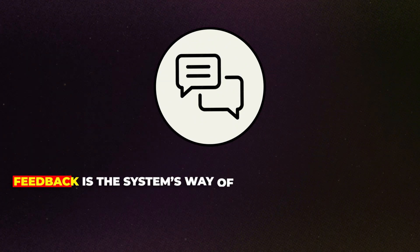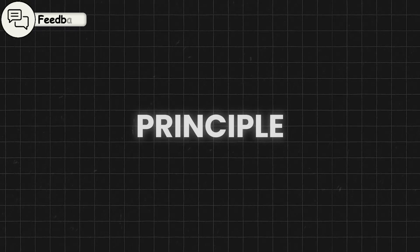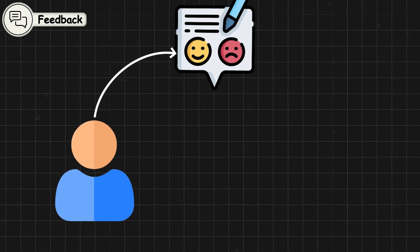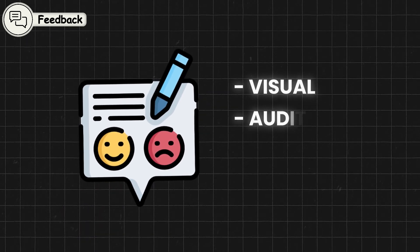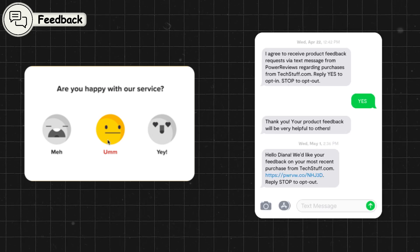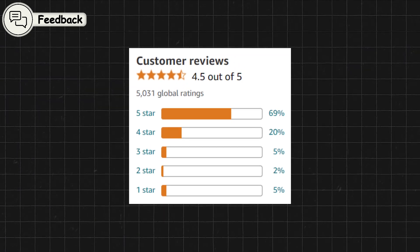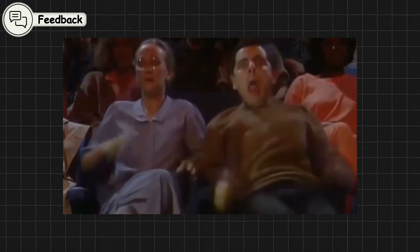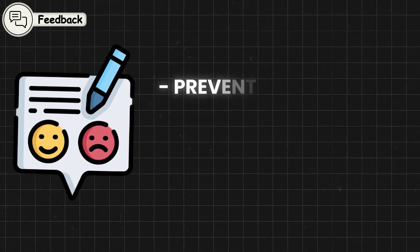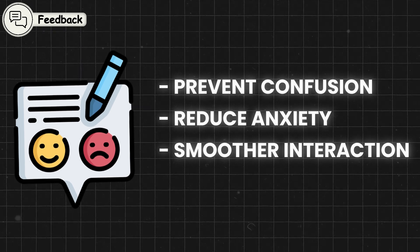Feedback is the system's way of communicating with the user in response to their actions. It's a crucial principle that helps users feel in control by letting them know their inputs have been received and processed. Feedback can be visual, auditory, or tactile, and it ranges from subtle animations to explicit confirmation messages. Effective feedback reassures users that they are on the right path or, conversely, alerts them when something needs their attention. Feedback loops help prevent confusion, reduce anxiety, and create a smoother, more intuitive interaction.